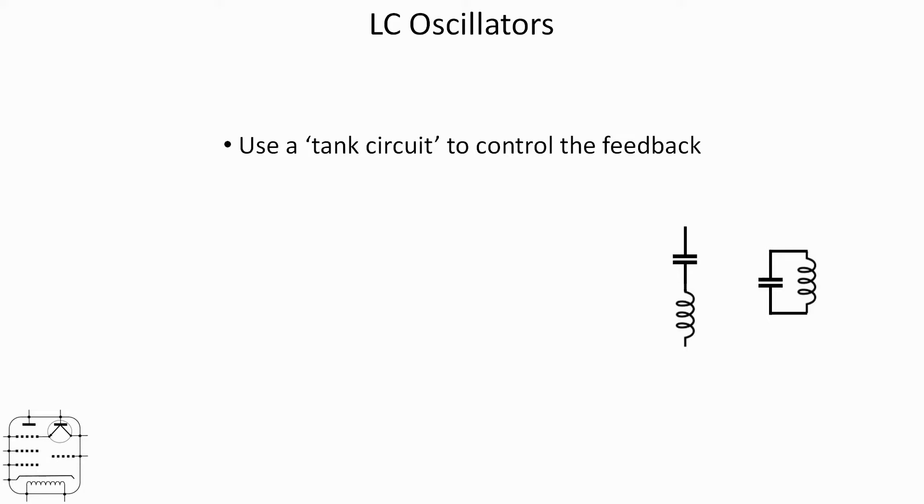Both of those circuits possess resonance which is based on the value of the inductor and the capacitor. At resonance, both those circuits possess markedly different impedance, so you can use them to effectively select a frequency at which oscillation will occur.